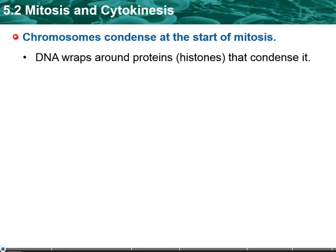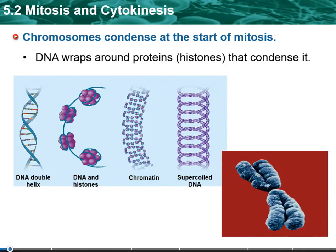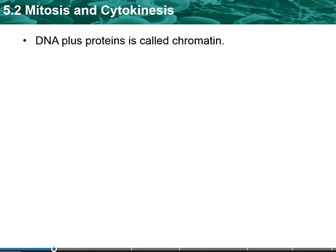The DNA, when it starts to condense down, it's going to wrap around proteins called histones that help condense it. You can see in this picture you've got the DNA double helix, and the DNA is going to wrap around the histones, which are just a cluster of proteins. Then it'll keep coiling and form what's known as chromatin, which is what it normally is inside the nucleus of the cell.